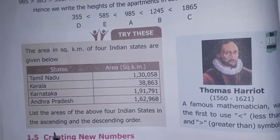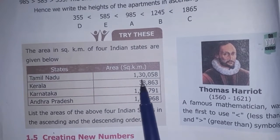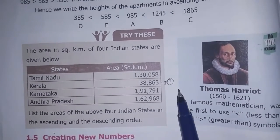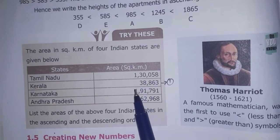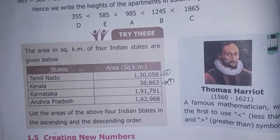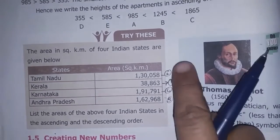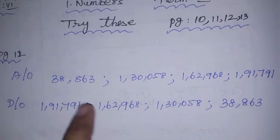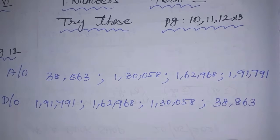Now, ascending order means small to big. Let's compare the numbers. Kerala has 5 digits, while the others have 6 digits — so Kerala comes first. Among the 6-digit numbers, we compare digit by digit. The ascending order is: 38,863; 1,30,058; 1,62,968; 1,91,791.